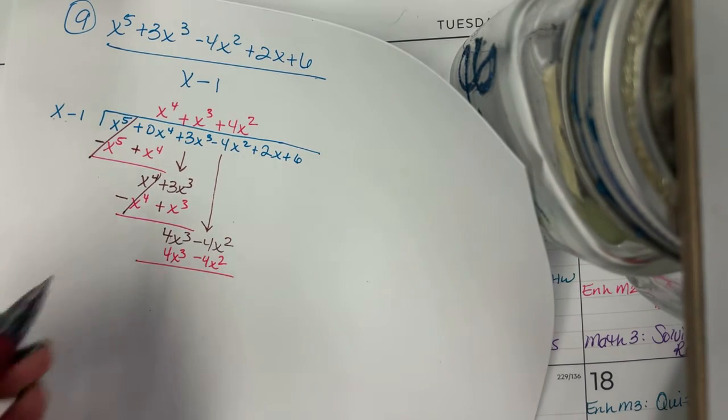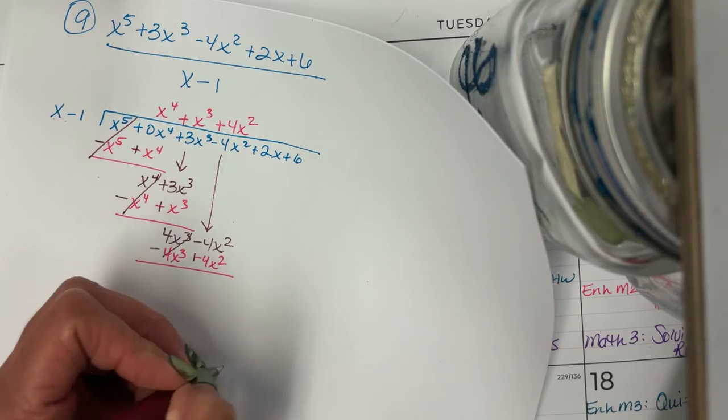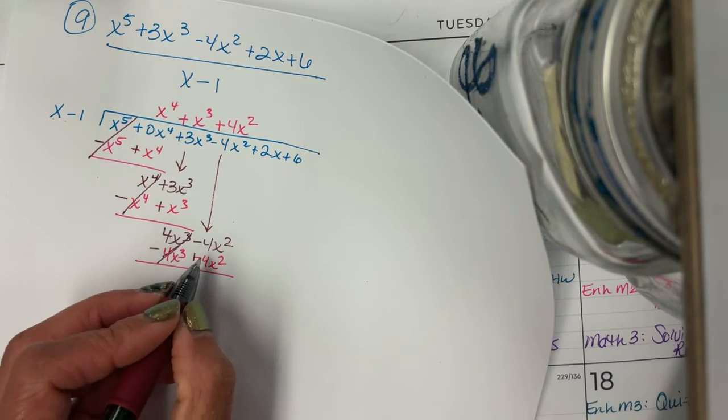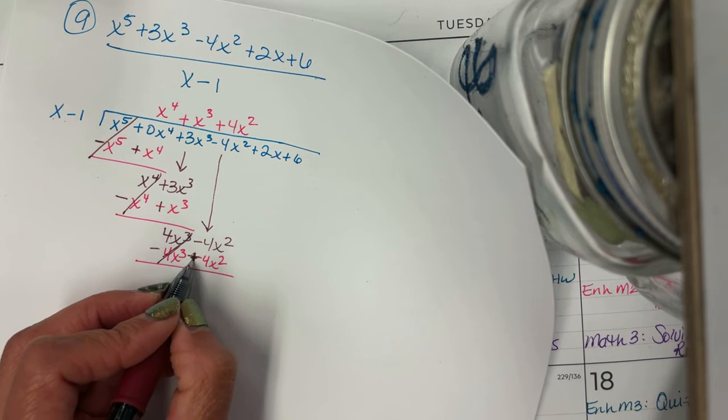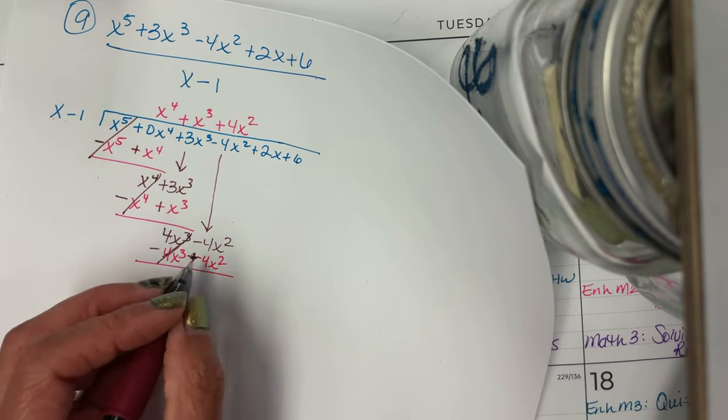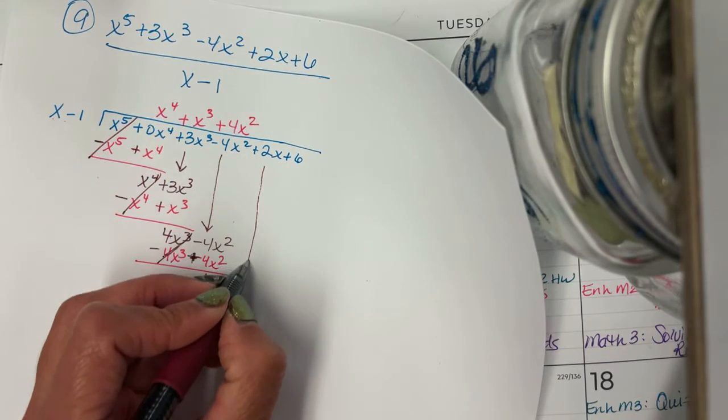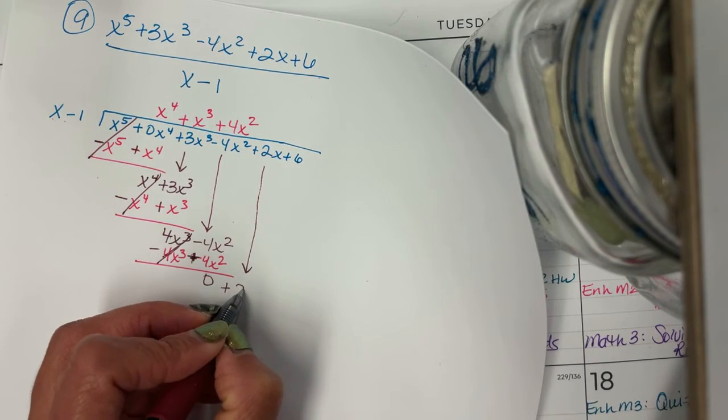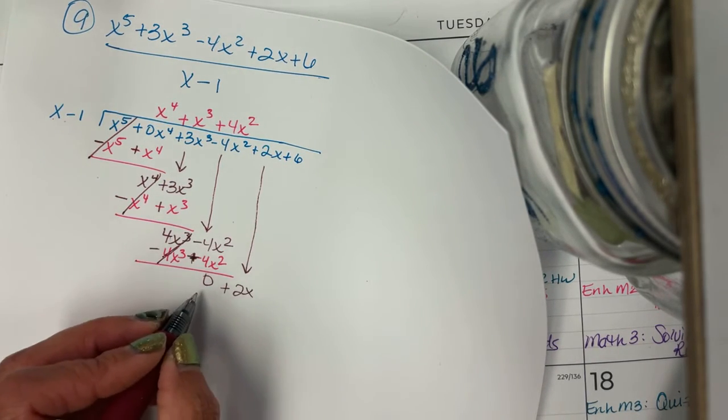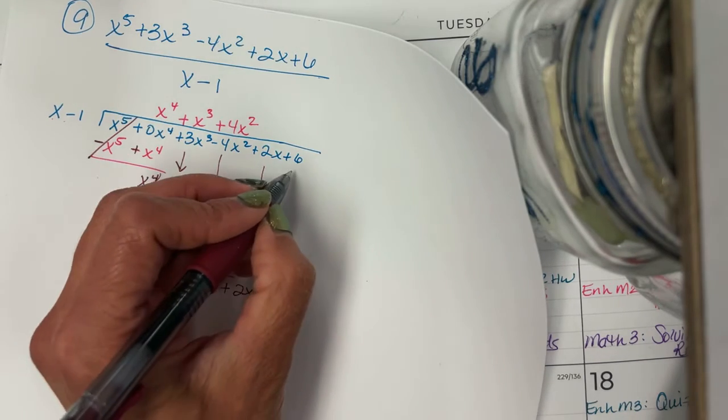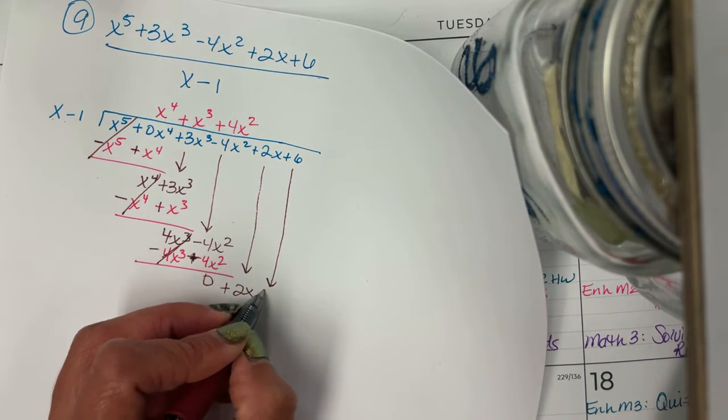Got to do the sign change. Got to subtract. Boom shakalaka. Negative 4x squared plus 4x squared, hey, that's zero. So then we just got to bring down the 2x, the positive 2x. And I need two terms. And zero doesn't count because it's zero. So I'm going to bring down the plus 6.